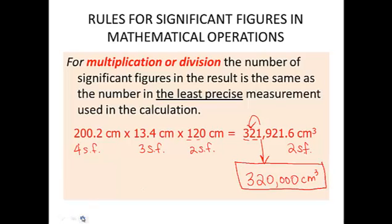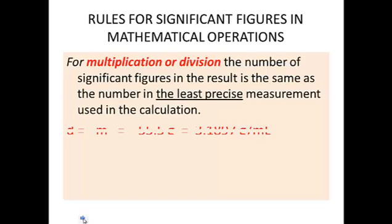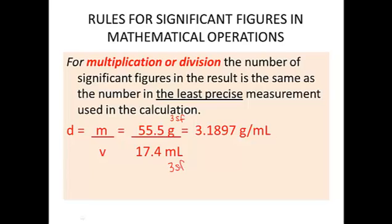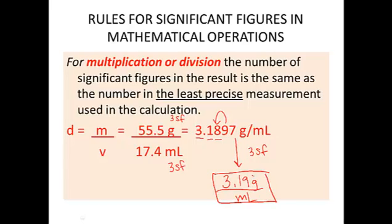We'll do another example of that type. Here we're going to look at density. The first term in the numerator has three significant figures, all three of those fives. And here this is also three significant figures. So it makes it easy - they both have three sig figs. So our answer can have only three significant figures. So it's the first three places. The nine rounds the eight up. So it would be 3.19 grams per milliliter.